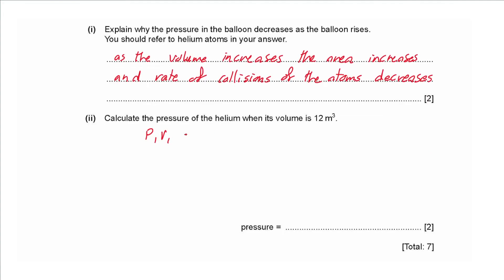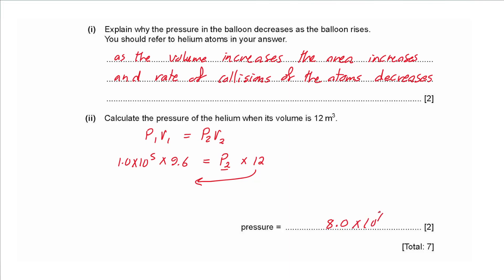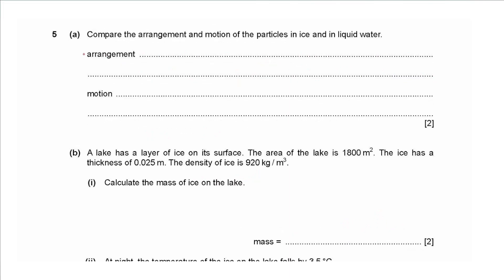For part ii: calculate the pressure when volume is 12 m³. Using p₁V₁ = p₂V₂: initial pressure 1.0 × 10⁵ Pa times initial volume 9.6, divided by final volume 12, gives 80 000 Pa, or 8.0 × 10⁴ Pa.